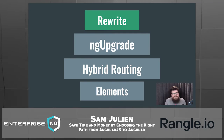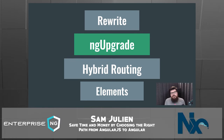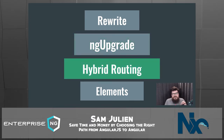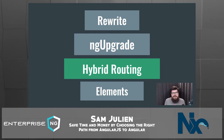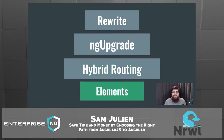The second path is ng upgrade, a library written by the Angular team that lets you run both AngularJS and Angular side by side in the same application. It works really well for medium to large applications where there's a need to do this migration while also building new features in production. The third strategy — the 'three and a half' — is hybrid routing. You can do this with ng upgrade or without: server-side by having the server send the user to either AngularJS or Angular based on the path, or on the front end with the client.